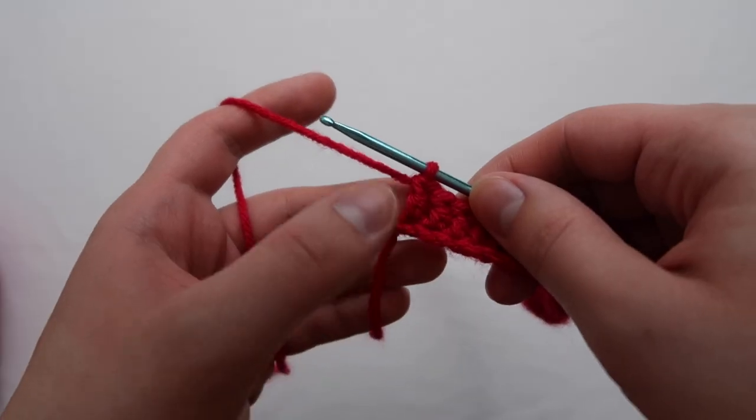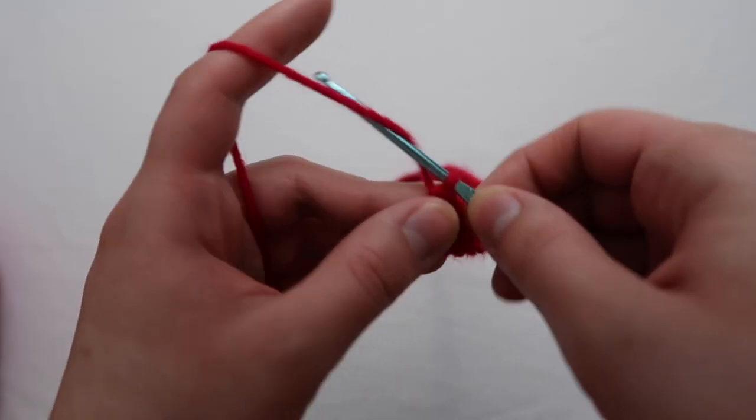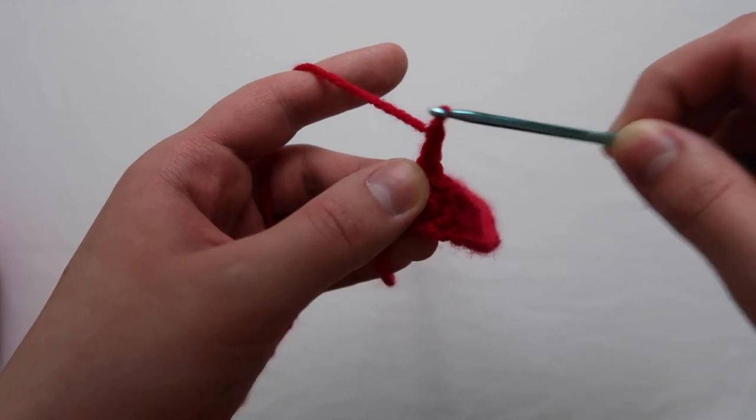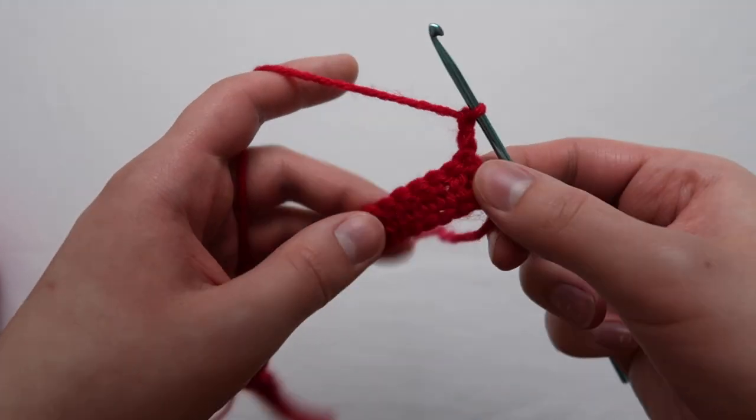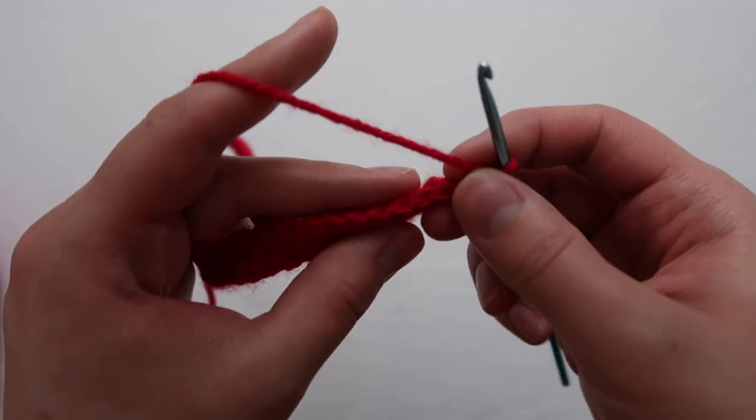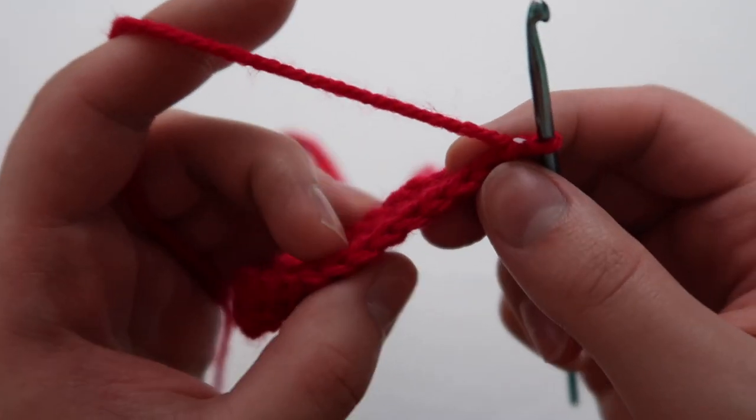Once you get to the end of the row, you're going to want to turn around. To do that, you're going to chain two. On the double crochet side you're going to chain two, and then on the opposite side you're only going to chain once.